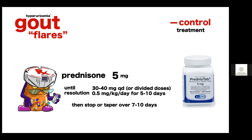If using prednisone, the dose is 30 to 40mg, prescribed once daily or in divided doses. You can also calculate the daily dose as 0.5mg/kg/day. This treatment continues until the flare resolves, which takes just under two weeks. We don't always need to taper prednisone when given for a short period — tapering over seven days is an option, but if given for five to ten days you'd keep the patient on prednisone for almost three weeks, which is not always necessary.